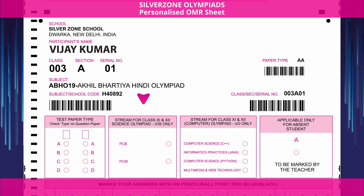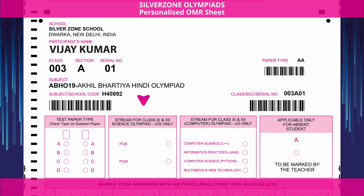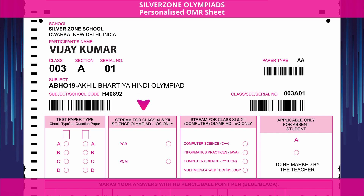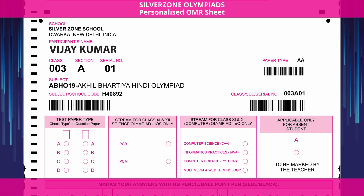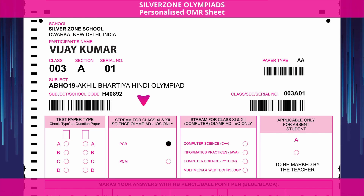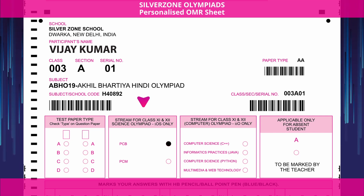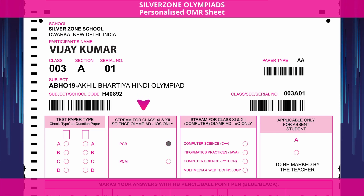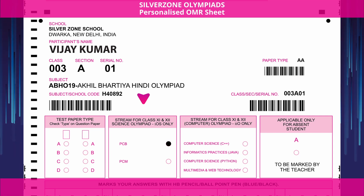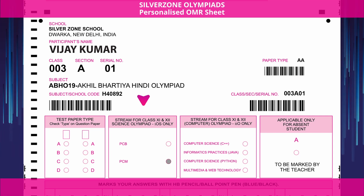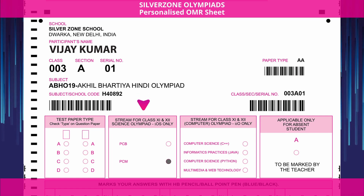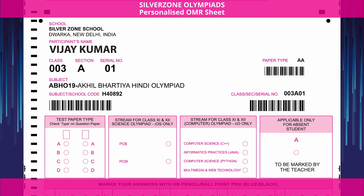The second box will only be filled by the students of class 11th and 12th who are participating in the International Olympiad of Science. Highlight the circle corresponding to PCB if you have opted for Physics, Chemistry and Biology as your subjects, or else PCM if you have opted for Physics, Chemistry and Mathematics.